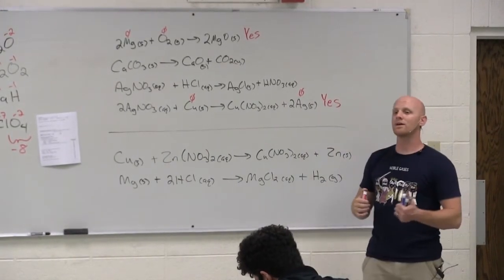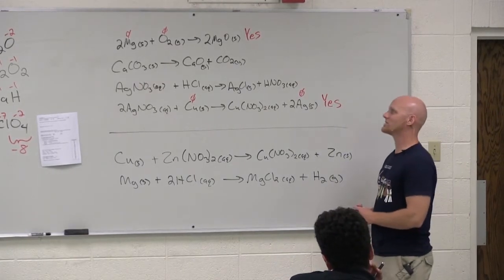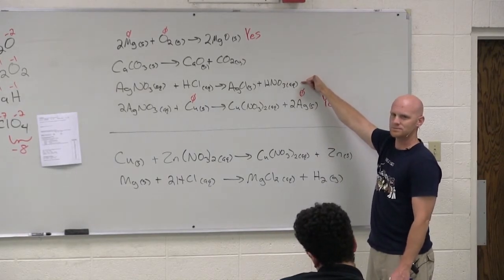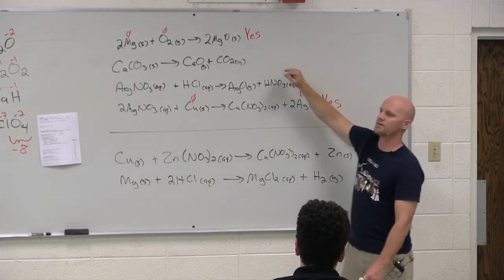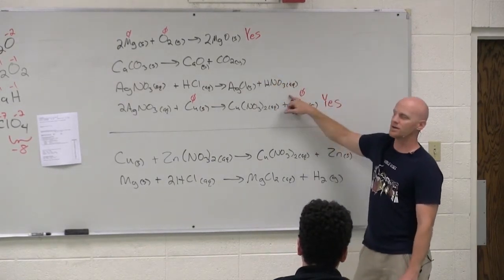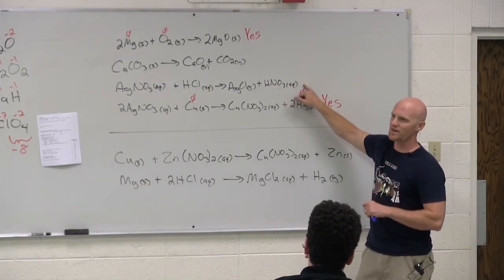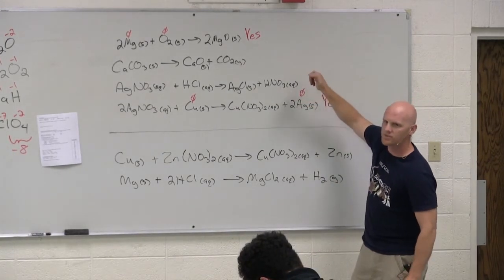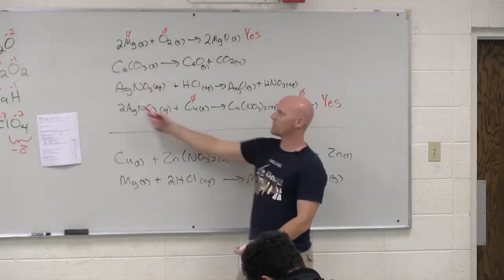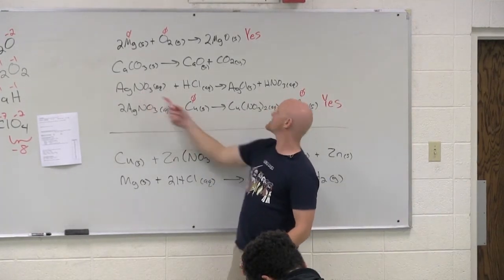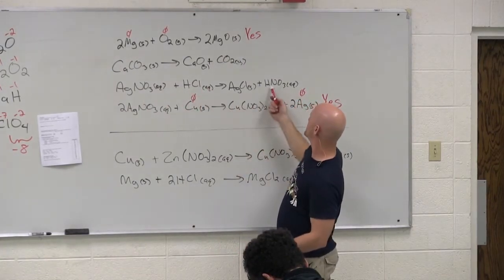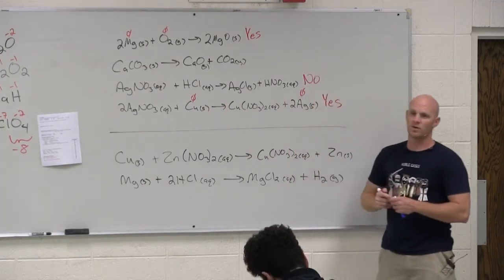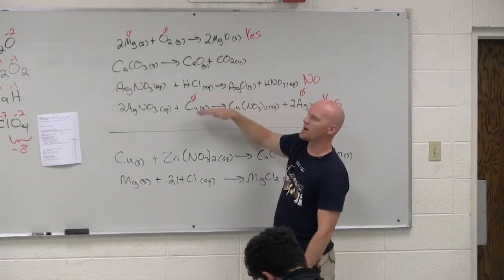Two out of four were simple to identify as redox. Going back to the third — do you recognize what kind of reaction that is? It's a double displacement reaction. Double displacement, or double replacement, reactions are not redox reactions. Silver stays plus one, nitrogen stays plus five as part of nitrate — nobody changes. So double displacement reactions are never redox reactions.